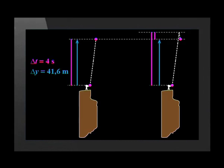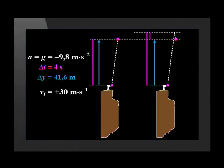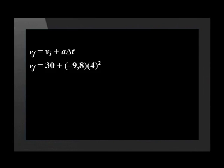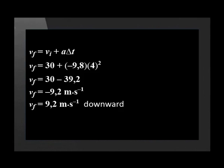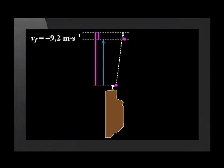We don't know which picture is correct, so we add all the known information about this interval into both of them. We are asked for the ball's velocity at the end of this interval. Using the equation and substituting values carefully with correct signs, the answer is negative 9.2 meters per second. The minus sign means downward, so this tells us the ball is already dropping by this time. This confirms the correct drawing.